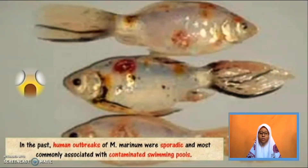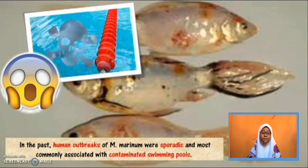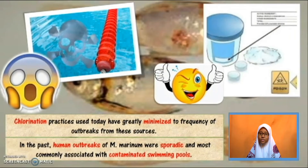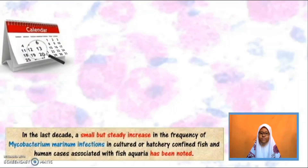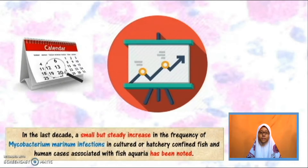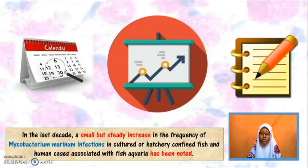In the past, human outbreaks of Mycobacterium marinum were sporadic and most commonly associated with contaminated swimming pools. Luckily, chlorination practices used today have greatly minimized the frequency of outbreaks from these sources. In the last decade, a small but steady increase in the frequency of Mycobacterium marinum infections in cultured or hatchery-confined fish and human cases associated with fish aquaria has been noted.